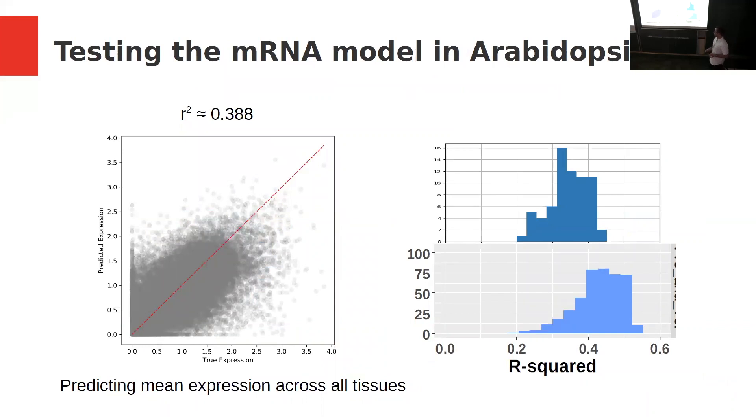This is some preliminary results that I've done in Arabidopsis using Hai's model. What you're looking at on the left is a prediction of mean expression across all tissues for all genes in Arabidopsis. You can sort of tell that it's similar in accuracy to Hai's model. If you compare generally the distributions across all tissues, what I want to emphasize is the models have comparable results. So they do also work in Arabidopsis.